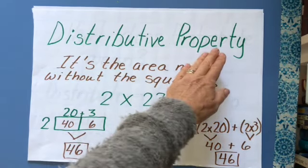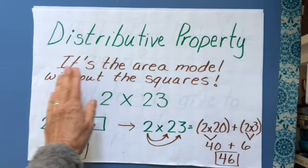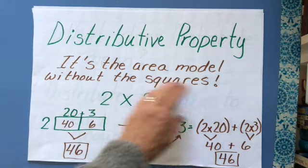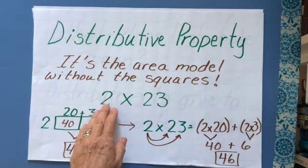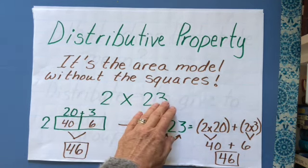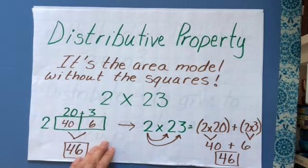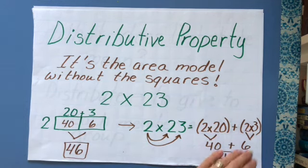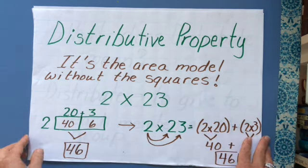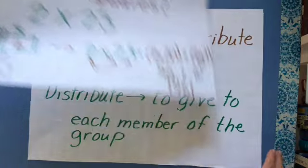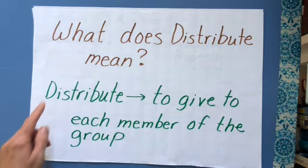This video is about the distributive property. The distributive property is just like the area model without the squares. For example, if you have a problem like 2 times 23, we know how to do the area model, and this is where the distributive property comes in. Distributive means to give to each member of a group.